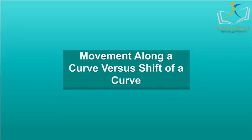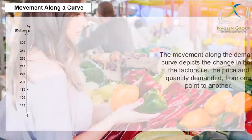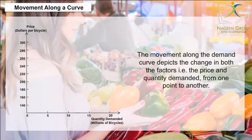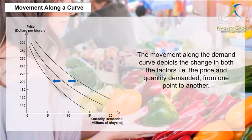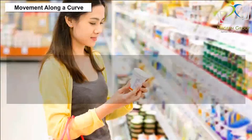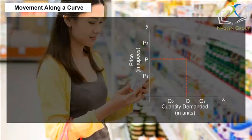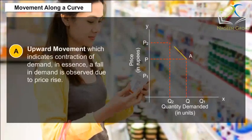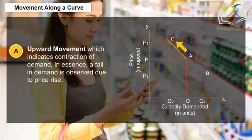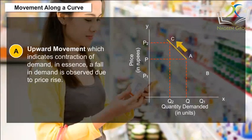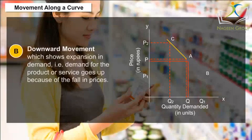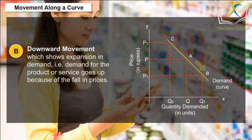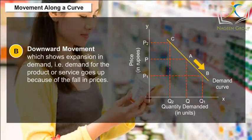Movement along a curve versus shift of a curve: The movement along the demand curve depicts the change in both price and quantity demanded from one point to another. The movement along the curve can be in any of two directions: A. Upward movement, which indicates contraction of demand — a fall in demand is observed due to price rise. B. Downward movement, which shows expansion in demand, i.e., demand for the product or service goes up because of the fall in prices.